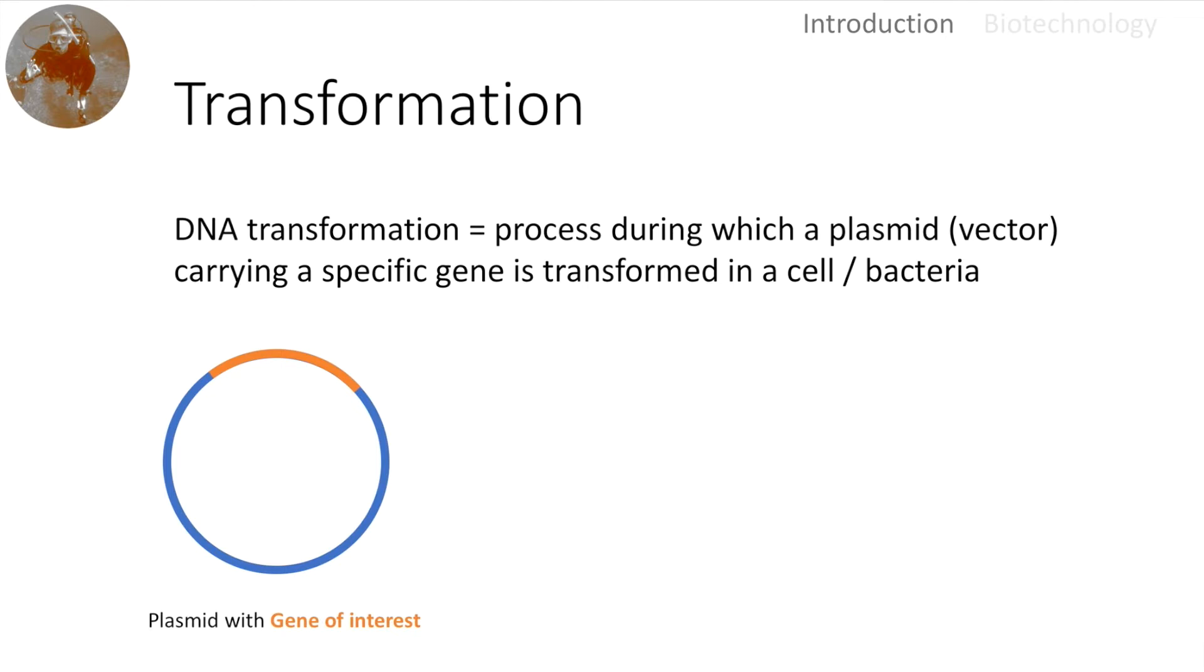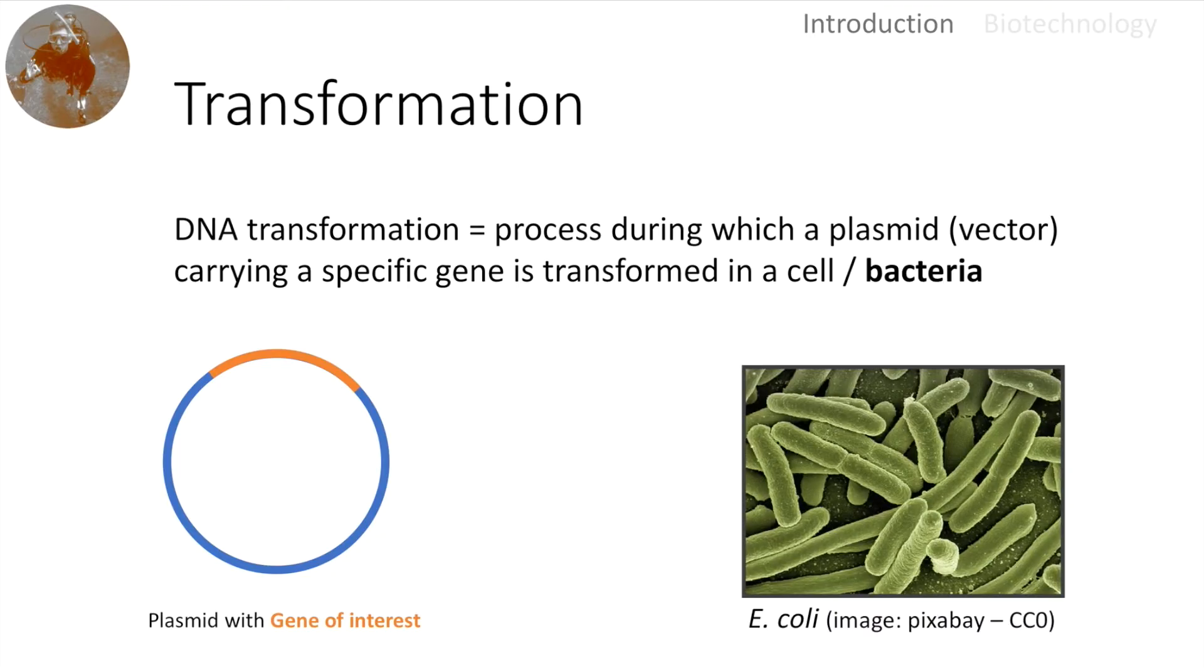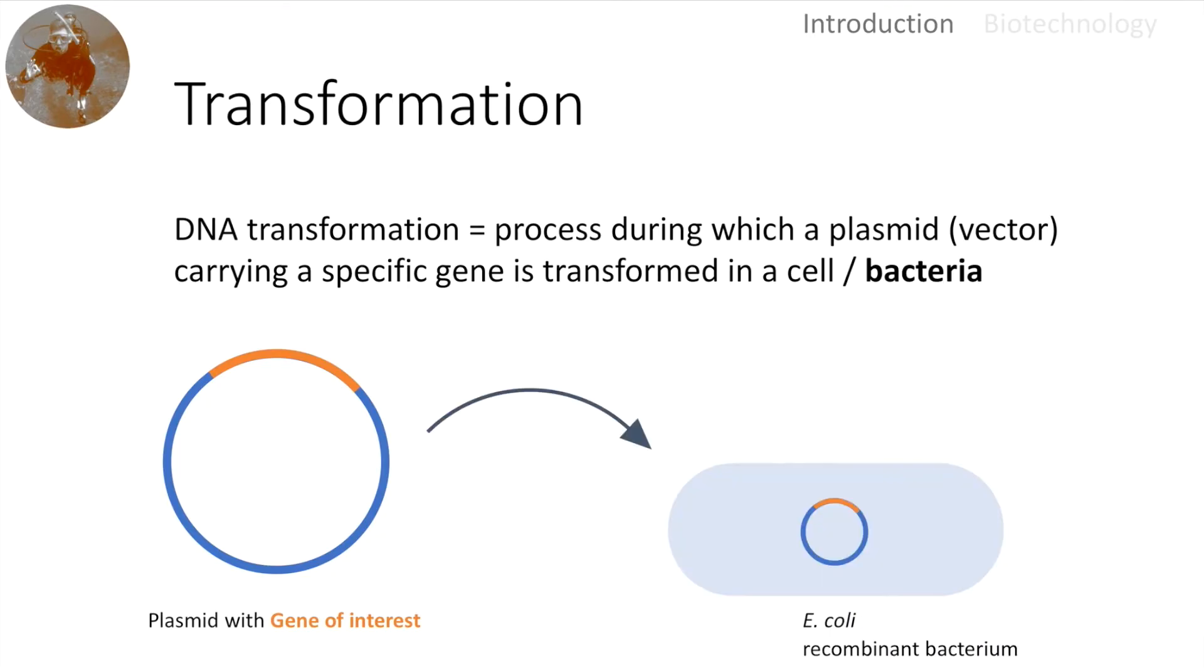The most commonly used bacteria for this process is E. coli. What happens if we transform a plasmid into bacteria like E. coli? We can insert this plasmid via heat shock for example and then the gene of interest is transcribed and translated into proteins. This was just a short explanation of transformation and we need this to explain the blue-white screen.